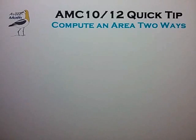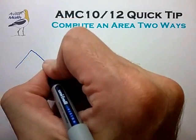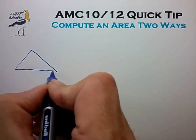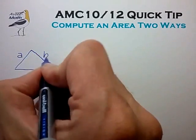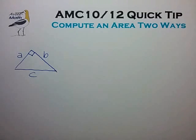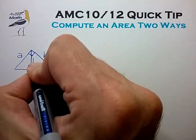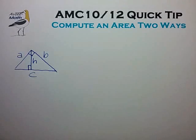In this video we'll look at a simple technique for creating useful geometry relationships by computing an area two different ways. In our first example, let's look at a simple right triangle with legs A and B and hypotenuse C. It's often useful to construct the altitude to the hypotenuse, so let's draw that in and call that H. We can calculate H by computing the area of this triangle in two ways.